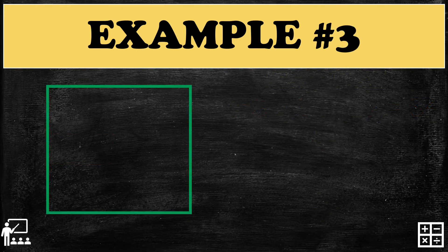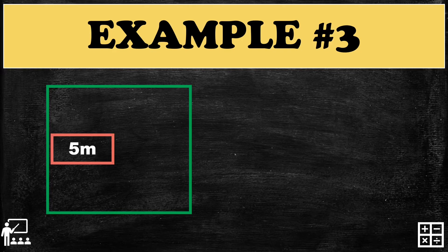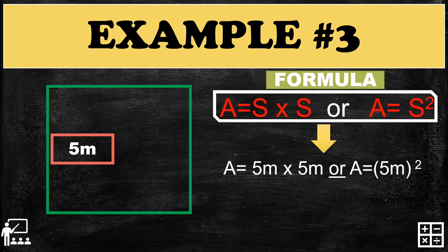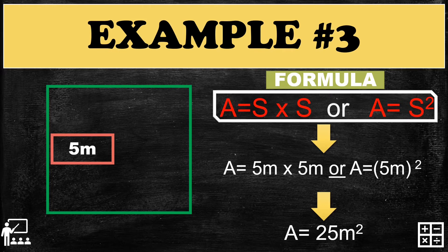Example number three: a square has one side measuring 5 meters. Use the formula, substitute the measurement of the sides, and multiply: 5 times 5 gives you 25. For the units, it gives us meters squared. So the answer is 25 meters squared.